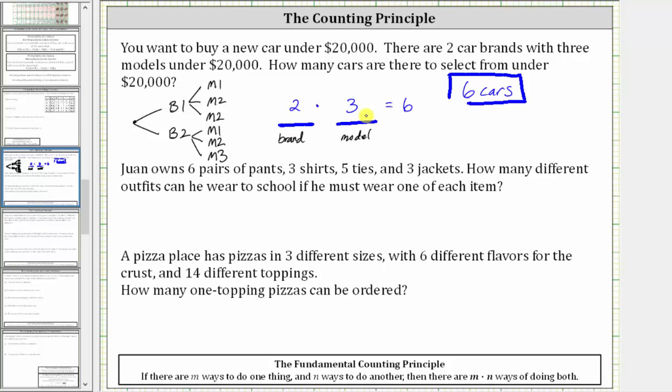For the remaining examples, we will use the fundamental counting principle. So next we're told Juan owns six pairs of pants, three shirts, five ties, and three jackets. How many different outfits can he wear to school if he must wear one of each item?